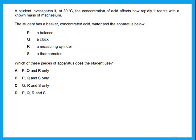'How rapidly' means how fast the reaction is — he needs a clock. 'A known mass of magnesium' means he needs to measure mass — so he needs a balance. He uses all of the apparatus listed, so the answer is D.